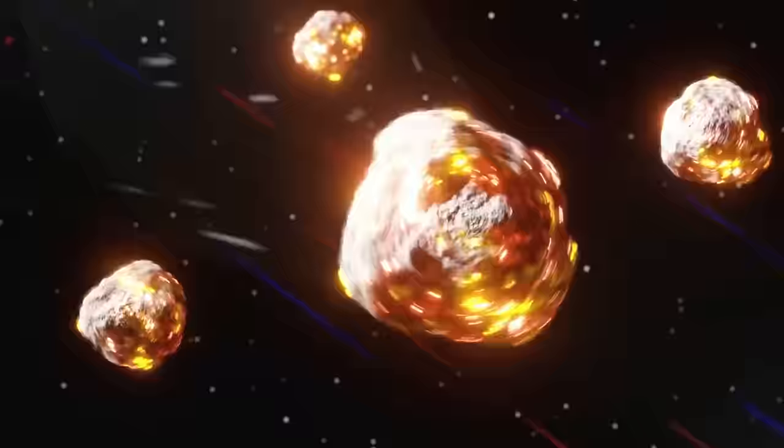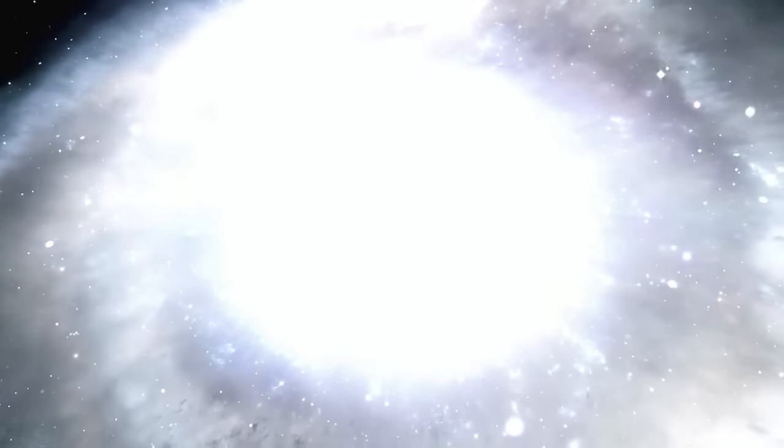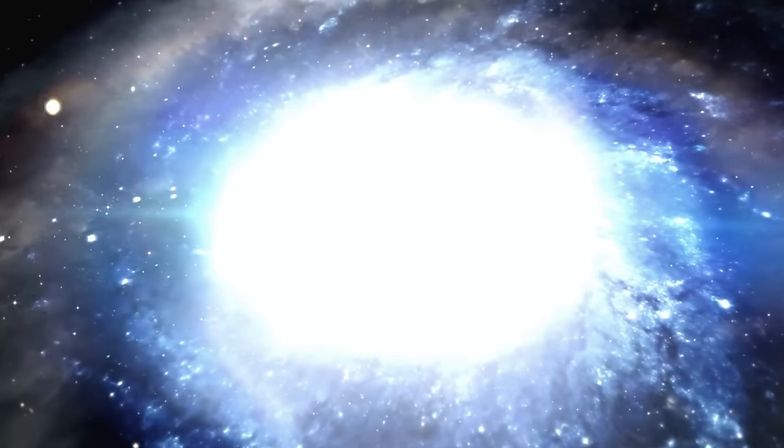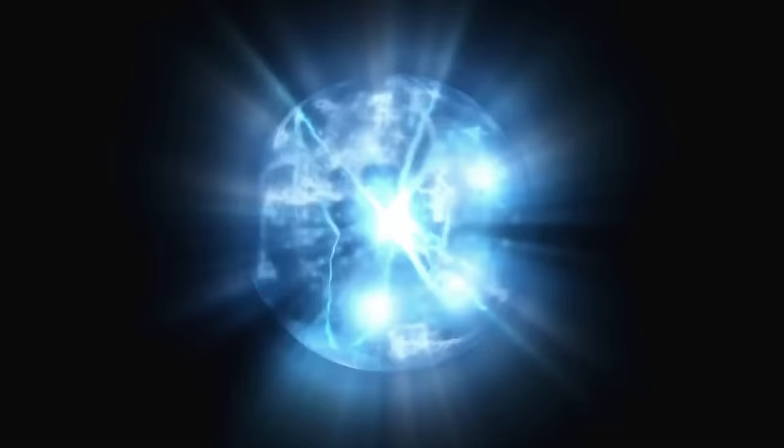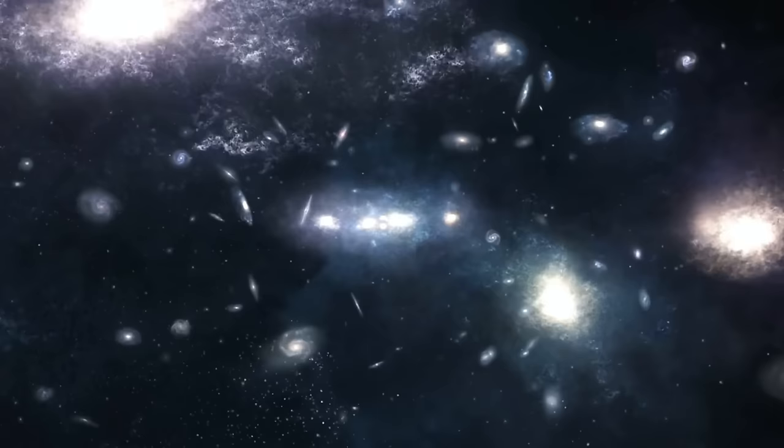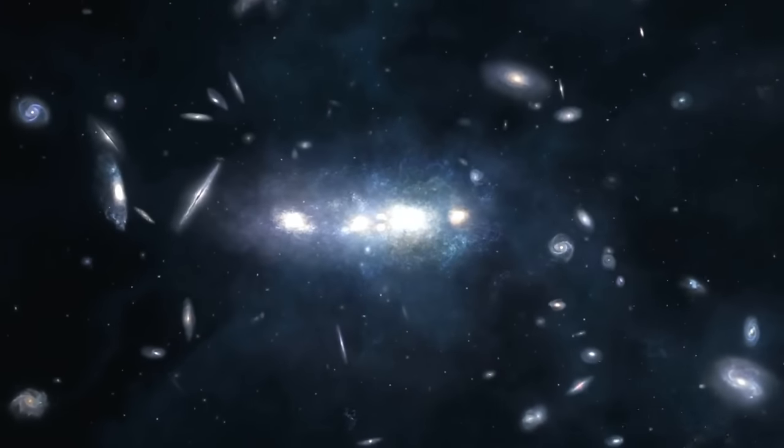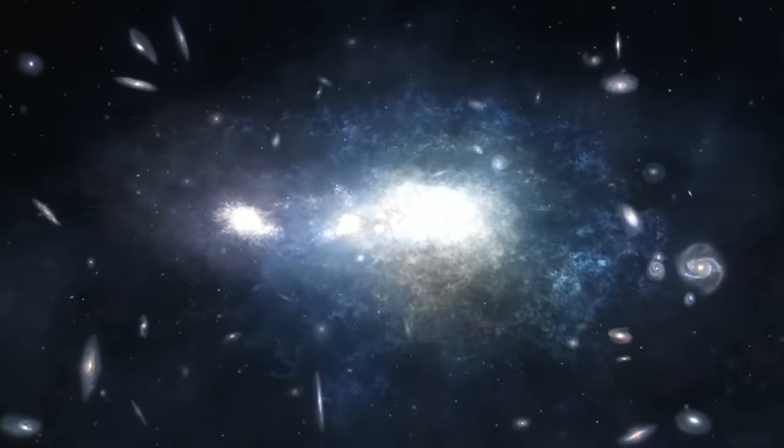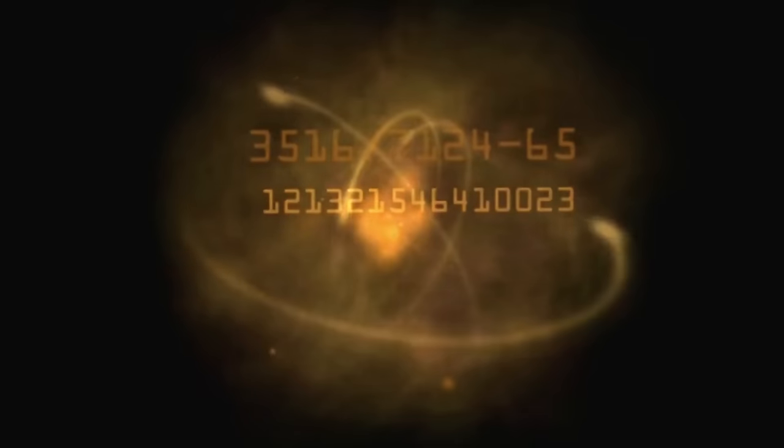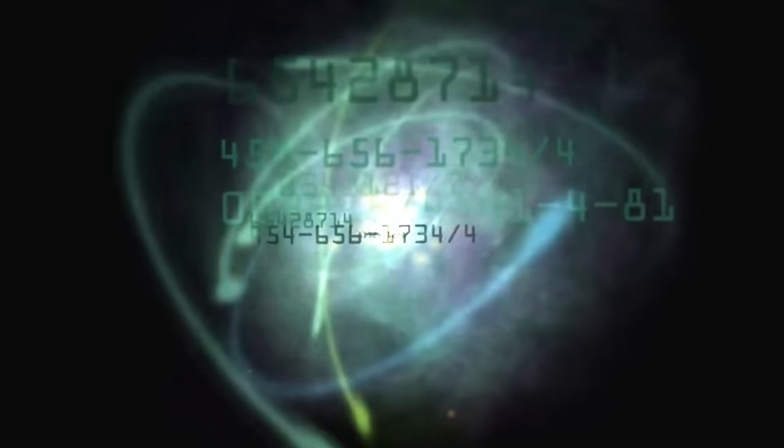The existence of the universe poses a paradox. According to the Standard Model of Particle Physics, the Big Bang should have produced matter and antimatter in identical amounts. Antimatter, which is essentially a counterpart to matter with opposite charge for every particle, should annihilate matter upon contact, leaving behind nothing but light in a barren universe. Yet the presence of galaxies, stars, planets, and life itself, with virtually no antimatter, presents a conundrum known as the matter-antimatter asymmetry. This fundamental puzzle remains one of the biggest unanswered questions in physics today.